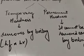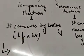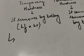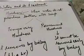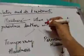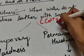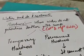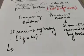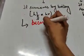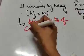Temporary hardness boiling se remove hoti hai. Pehli cheez — hardness hoti kis wajah se hai? Hardness hoti hai jab paani ke andar calcium ya magnesium salts present hon. Agar paani calcium and magnesium salts contain kare, toh woh paani lather nahi produce karega. Temporary hardness is due to presence of bicarbonates of calcium and magnesium.